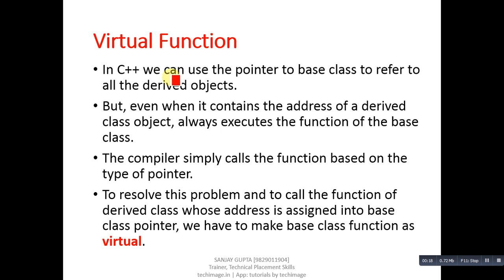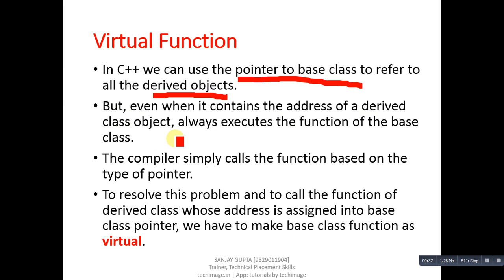In C++ we can use a pointer to a base class to refer to all derived class objects. If we declare a pointer of a base class, we can assign addresses of all the derived classes to that pointer. But even when it contains the address of a derived class object, it always executes the function of the base class.